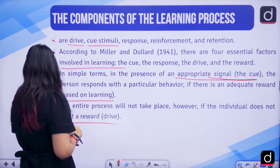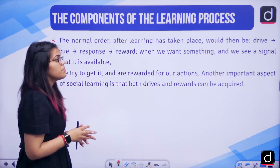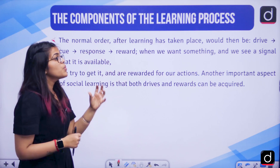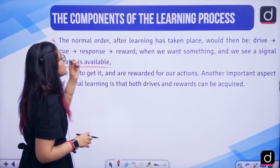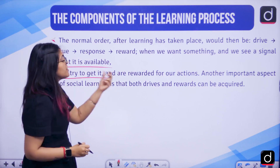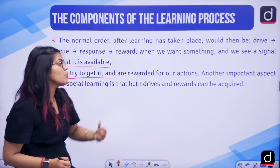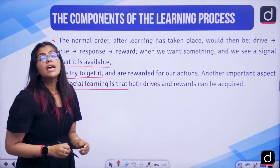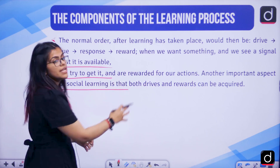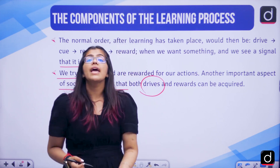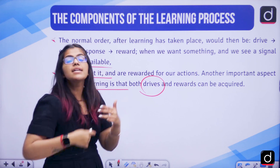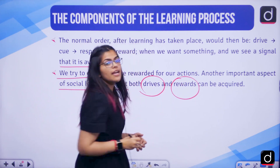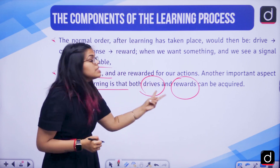The normal order after learning has taken place is: drive, cue, response, and reward. When we want something, we see a signal, we try to get it, and there are rewards for our actions. Another important aspect of social learning is that both drives and rewards can be acquired. The teacher can create these drives through situations like operant conditioning and classical conditioning, and rewards can also be acquired.